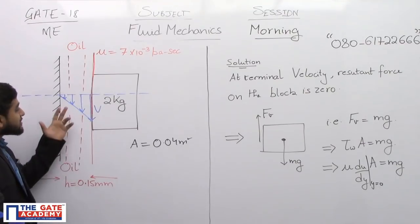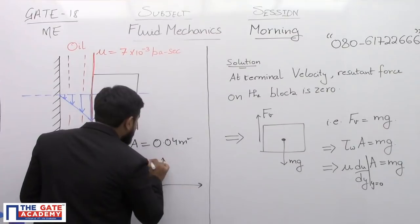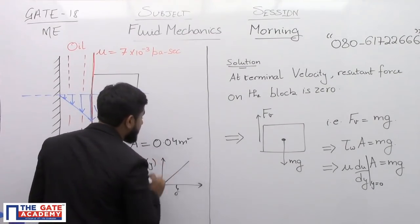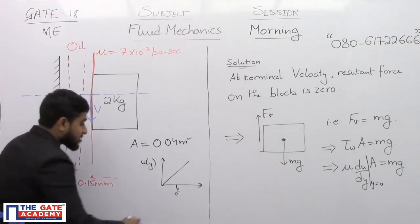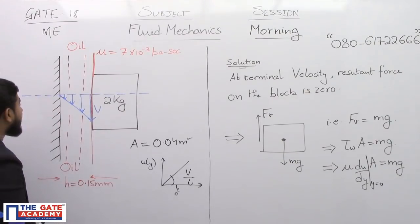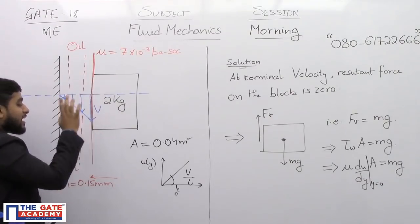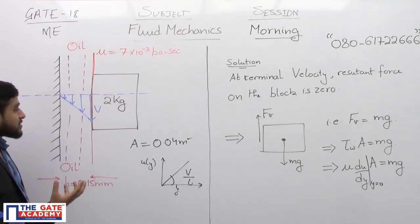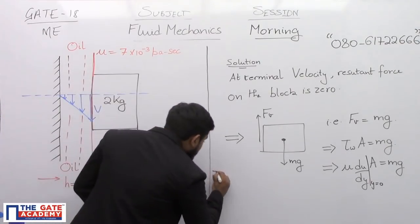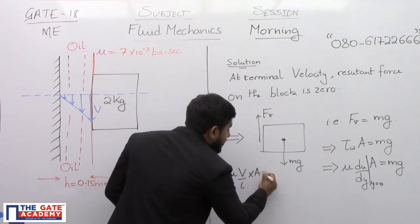Now in this case, it is given to us that the velocity profile is linear. So when you will draw a graph of u of y with respect to y, the graph will be somewhat a straight line. And the slope of this graph will be equal to capital V by L. Why capital V by L? Because this velocity is increasing linearly from 0 at the wall to capital V at the solid block. So slope of this will be capital V by L.